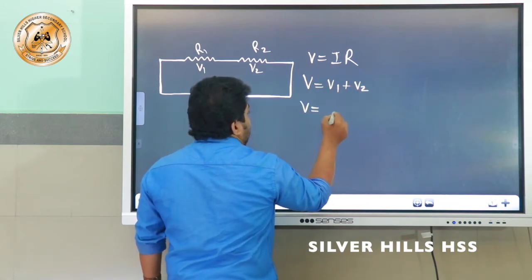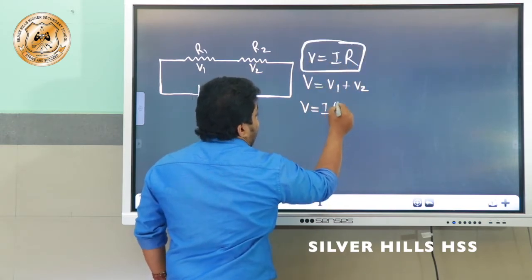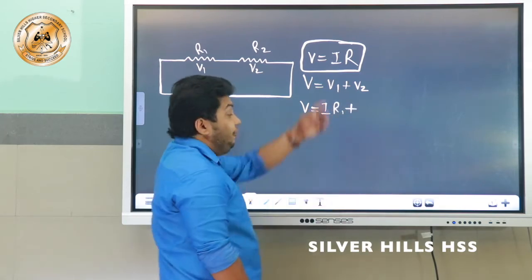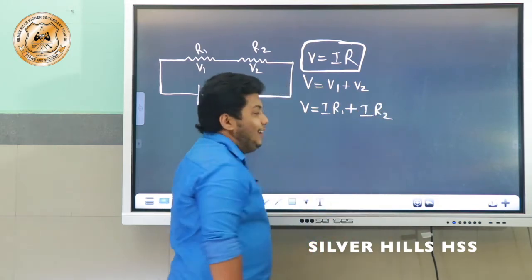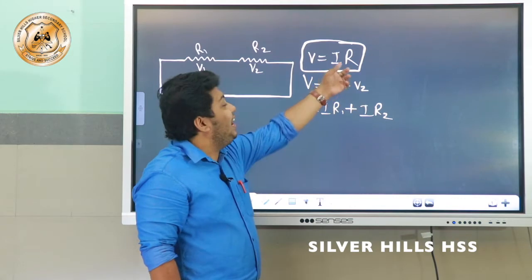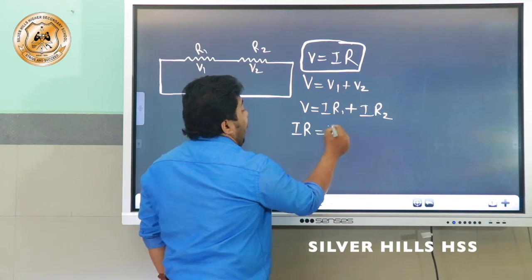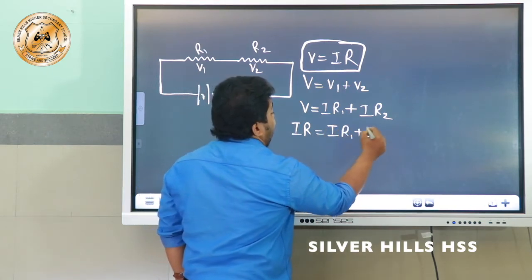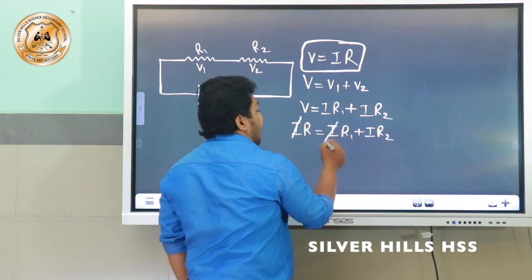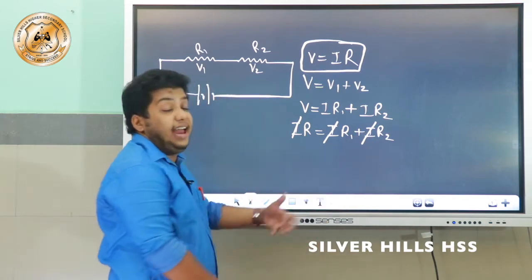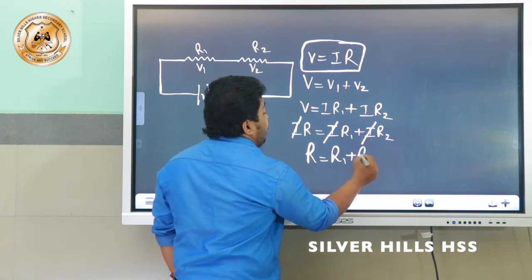Since V is IR, what will be V1? V1 is IR1. And what will be V2? V2 is IR2. And what is V? V is IR. Substituting, IR is equal to IR1 plus IR2. We can cancel the common factor I, and the result is R is equal to R1 plus R2.